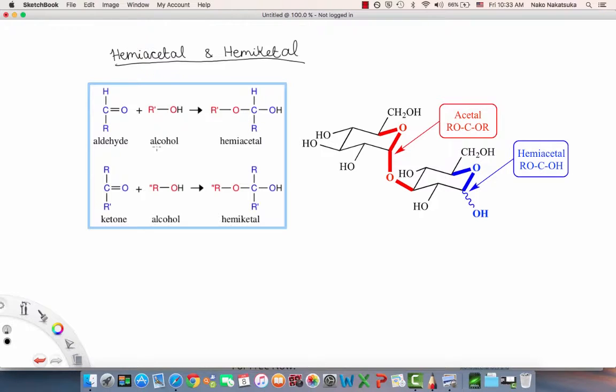And so, to form a hemiacetal, you need an aldehyde and an alcohol. So if you remember, we used the aldehyde at the very top of the acyclic structure and reacted it with the 5th carbon OH group, right? And so when you have an aldehyde and an alcohol, you can form a hemiacetal, which is this ROC bond right here, which you can see when you form the structures that look like this. And so when you go from acyclic to cyclic, you're forming a hemiacetal bond.